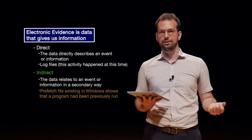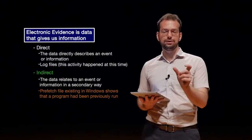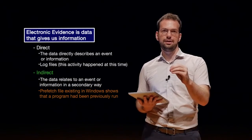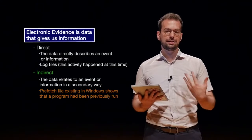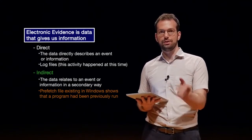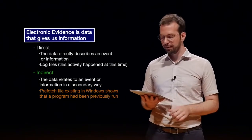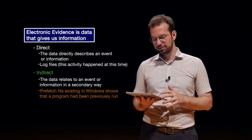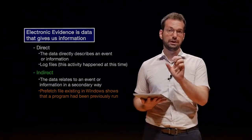For example, a prefetch file in Windows shows that a program had been previously run. If we just see that the file is there, we know the program has been run sometime in the past — that's secondary information. Just observing the prefetch file doesn't tell us explicitly that the program was run, but we can infer it from the existence of that file. Of course, we can analyze prefetch files for more detail, but think about when we're inferring information versus being explicitly told information.